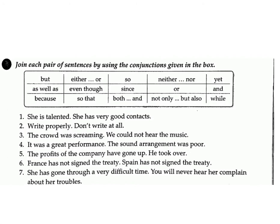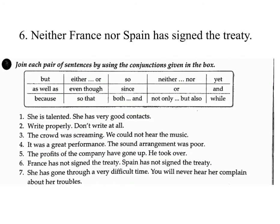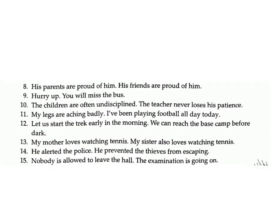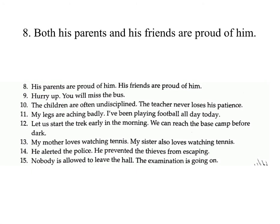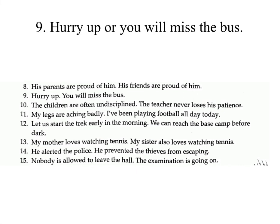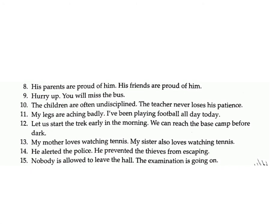Four: 'It was a great performance / the sound arrangement was poor.' Answer: It was a great performance but the sound arrangement was poor. Five: 'The profits of the company have gone up / he took over.' Answer: The profits of the company have gone up since he took over. Six: 'France has not signed the treaty / Spain has not signed the treaty.' Answer: Neither France nor Spain has signed the treaty. Seven: 'She has gone through a very difficult time / you will never hear her complain about her troubles.' Answer: She has gone through a very difficult time yet you will never hear her complain about her troubles. Eight: 'His parents are proud of him / his friends are proud of him.' Answer: Both his parents and his friends are proud of him. Nine: 'Hurry up / you will miss the bus.' Answer: Hurry up or you will miss the bus. Ten: 'The children are often undisciplined / the teacher never loses his patience.' Answer: Even though the children are often undisciplined, the teacher never loses patience.